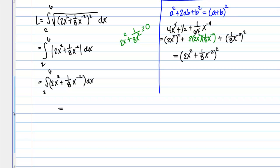And I can actually integrate this expression pretty easily. So if I find the antiderivative, I get 2X cubed over 3 plus 1/8 X to the negative 1 over negative 1. So 2/3 X cubed minus 1 over 8X evaluated between 2 and 6.